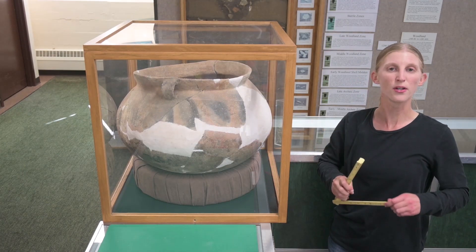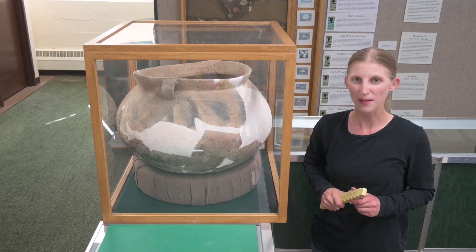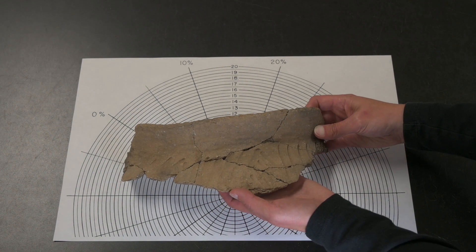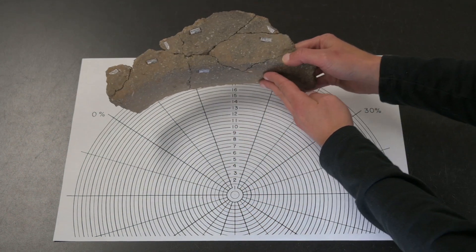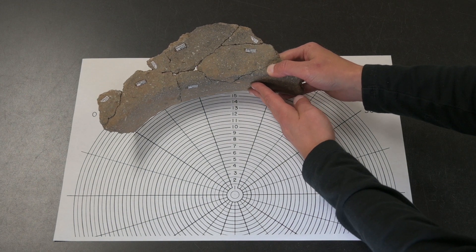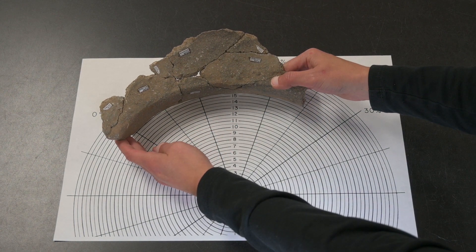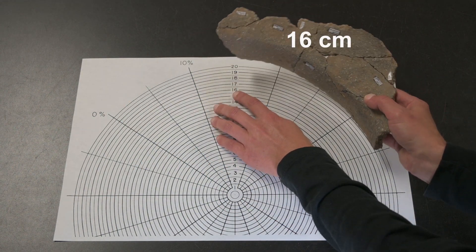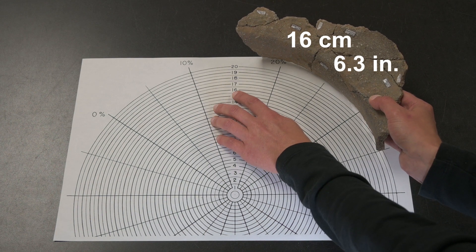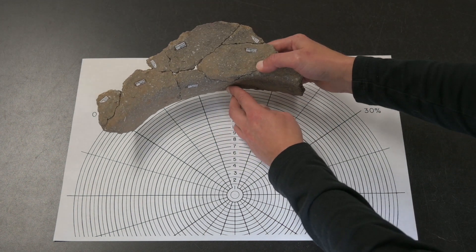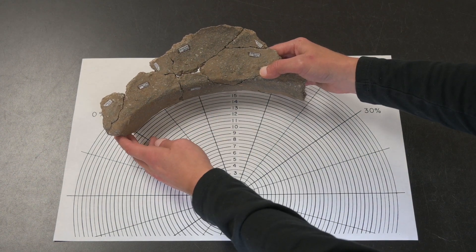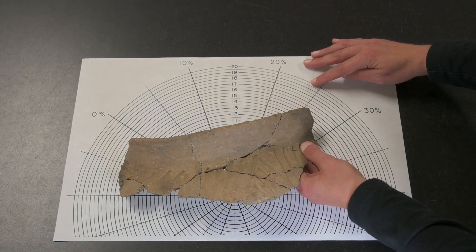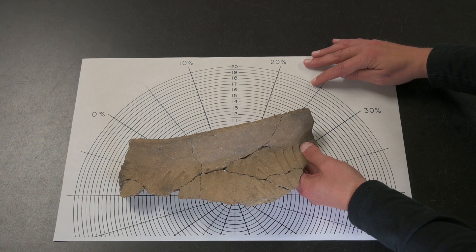But what if we only had part of the rim? Let's look at a much less complete vessel. Extrapolating from the refitted sherds of this oneota vessel, we get a radius of about 16 centimeters, or 6.3 inches, with about 23% of the rim present.